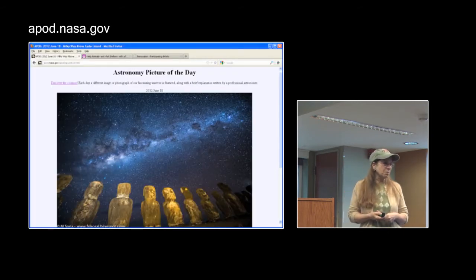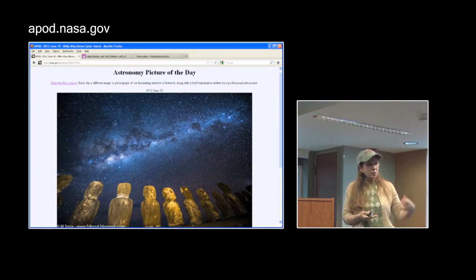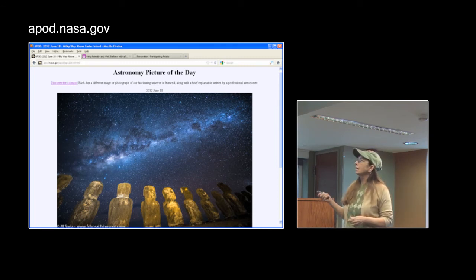APOD, Astronomy Picture of the Day, is a good place to go if you do a search for a deep sky object. Usually that first page of images that comes up, you will have images of several different wavelengths. That is a good place to collect images from.